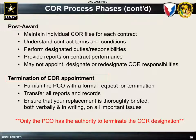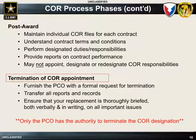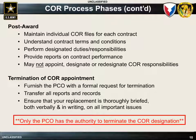The final phase is the termination of the COR's appointment. When the COR becomes aware that he or she will no longer be able to continue to perform the appointed duties — for example, when retiring or transferring to another agency — he or she should immediately inform the PCO so as to allow sufficient time for the PCO to appoint a replacement. It is important to note that only the PCO has the authority to appoint and or terminate a COR.